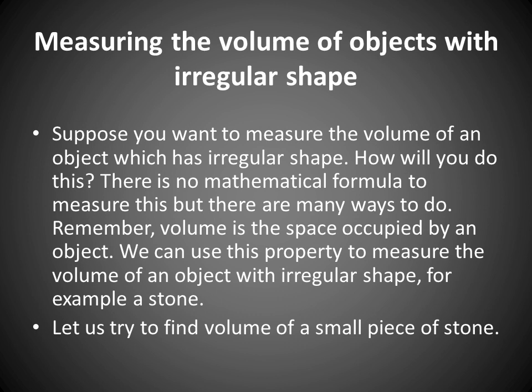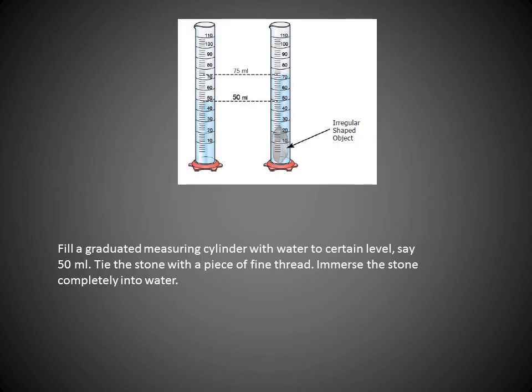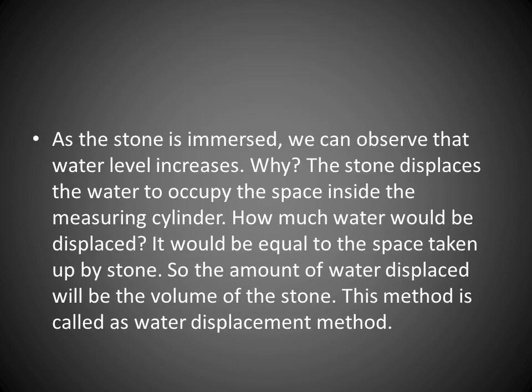Suppose you want to measure the volume of an object which has an irregular shape — how will you do this? There is no mathematical formula to measure this, but there are many ways to do it. Remember, volume is the space occupied by an object. We can use this property to measure the volume of an object with irregular shape. Let us try to find the volume of a small piece of stone. Fill a graduated measuring cylinder with water to a certain level, say 50 ml. Tie the stone with a piece of fine thread and immerse the stone completely into water. As the stone is immersed, we can observe that the water level increases. The stone displaces water to occupy the space inside the measuring cylinder. The amount of water displaced would be equal to the space taken up by the stone. So, the amount of water displaced will be the volume of the stone. This method is called the water displacement method.